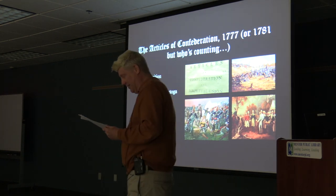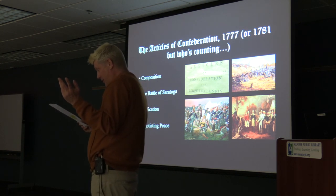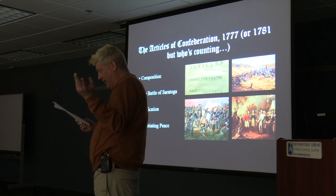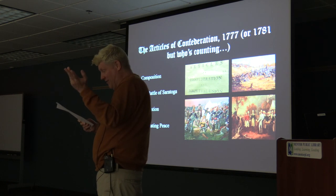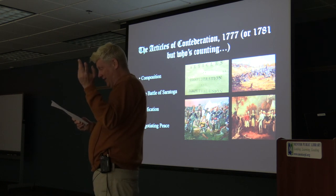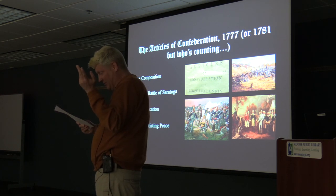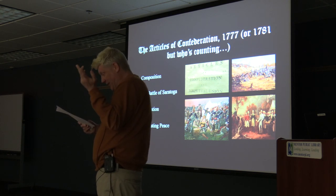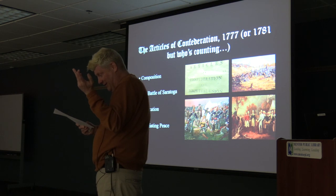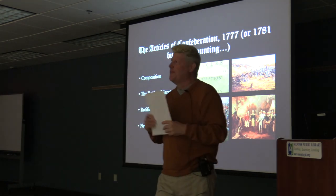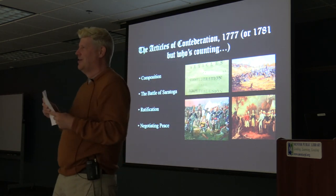By 1787, things had gotten so bad that James Madison wrote: 'Our situation is becoming every day more and more critical. Persons of reflection unanimously agree that the existing Confederacy is tottering to its foundation. The present system of governance neither has nor deserves advocates.' He continued: 'No money is paid into the public treasury. No respect is paid to the federal authority. Not a single state complies with congressional requisitions — several pass over them in silence and some positively reject them. It is not possible that a government can last long under these circumstances. Americans were losing all confidence in their political system.'